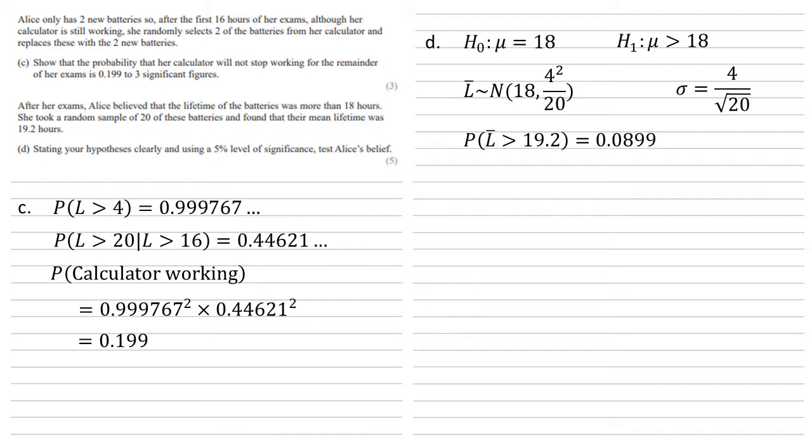We want the probability that L bar is larger than 19.2, as Alice got. Using the normal distribution function with our new values for the mean and the standard deviation, we get 0.0899.